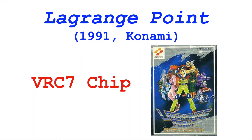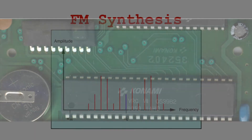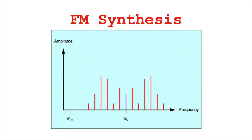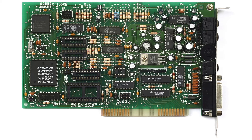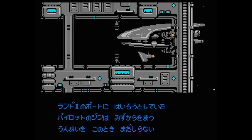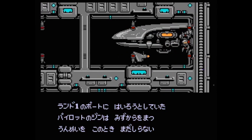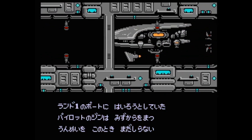One final chip worth noting is the VRC7, which was inside the 1991 game Lagrange Point. This is significant because it was an FM synthesis chip. I'm going to talk more about FM synthesis and games next time, digging into the Sega Genesis and PC sound cards, but this is a significant expansion of available timbres. Listening to it, you can hear that it sounds more like a Sega Genesis game than an NES game.